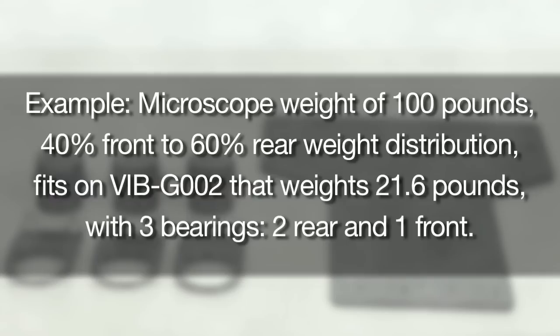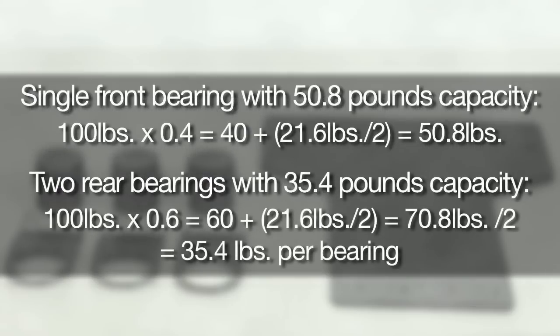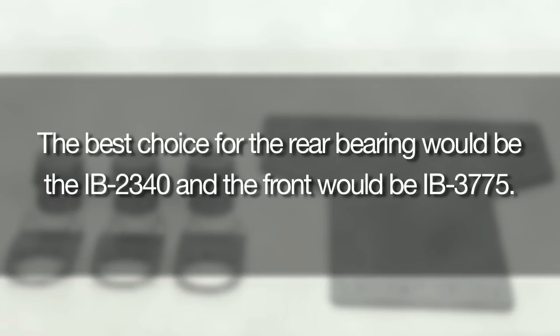A three-bearing arrangement would require one 50.8-pound capacity bearing in the front and two 35.4-pound capacity bearings in the rear. The best choice for the rear bearings would be the IB-2340 and the front would be IB-3775.